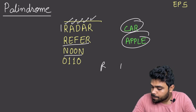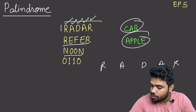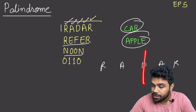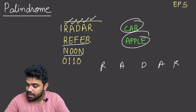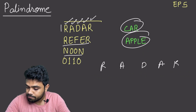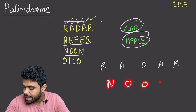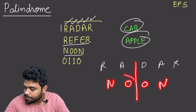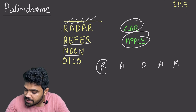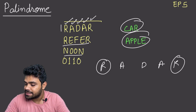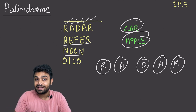We can evaluate whether a string is a palindrome very easily with the help of symmetry. For R, A, D, A, R — we can draw the line of symmetry here. If we keep a mirror here, we get R, A, D, A, R. For 'noon', the line of symmetry is in the middle. This means the first character is the same as the last character, the second character is the same as the second last, and so on.